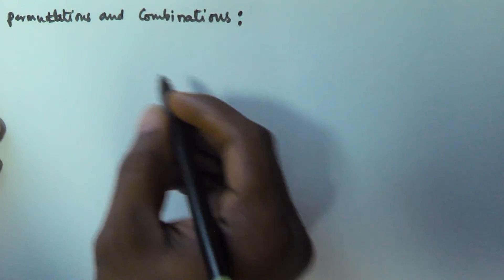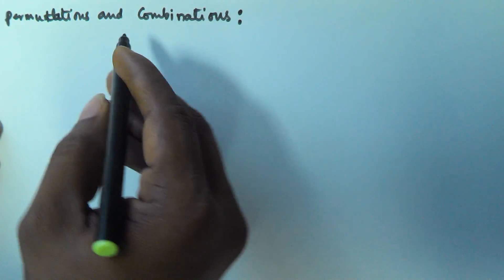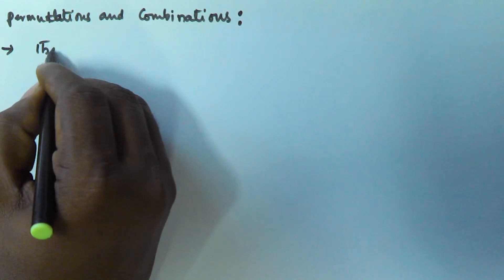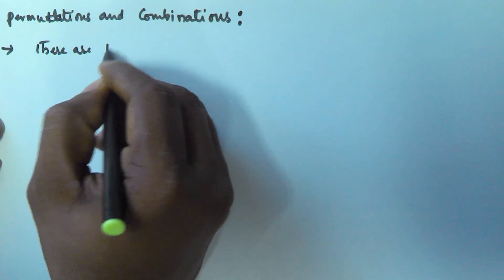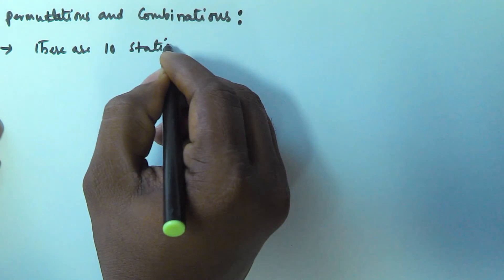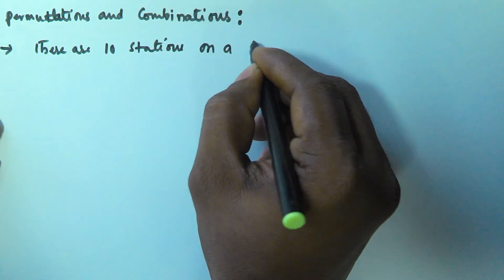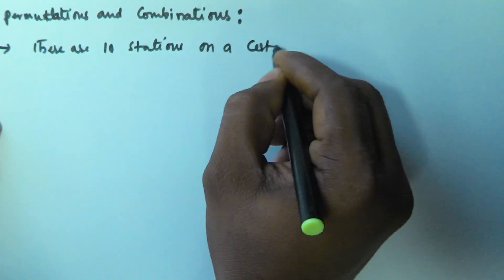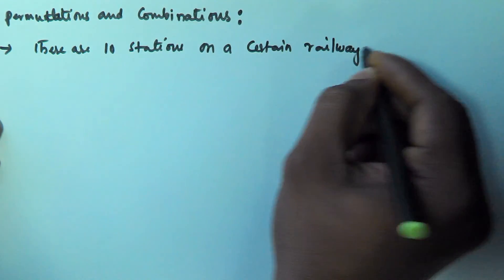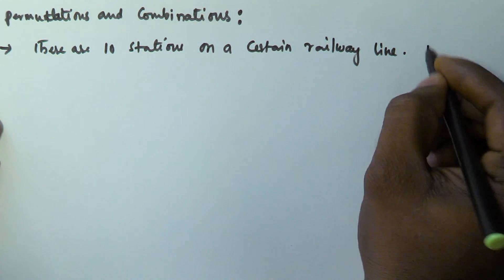Hello friends, in this video we will see another problem related to permutations and combinations. The problem is: there are 10 stations on a certain railway line.